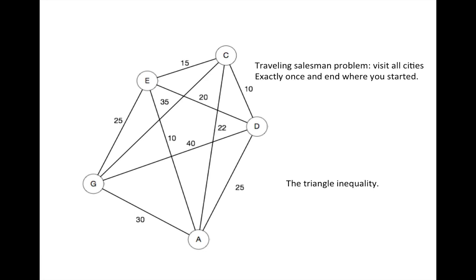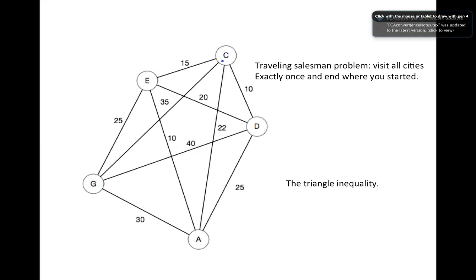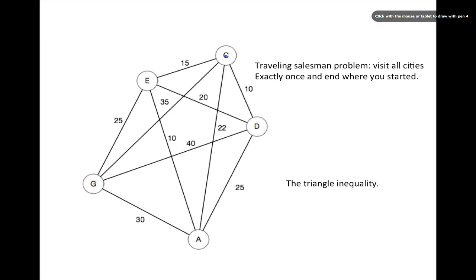This is a video about the Traveling Salesman Problem. The problem is where you have a number of cities — in this case five cities — and distances between the cities. That creates a graph where the nodes are the cities and the edges are the roads connecting the cities. The goal of a salesman is to start in some city, visit all of the cities exactly once, and end up in the initial city, with the total length of the tour being minimal.